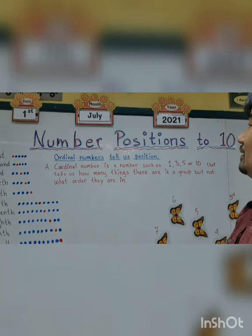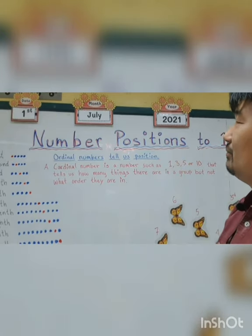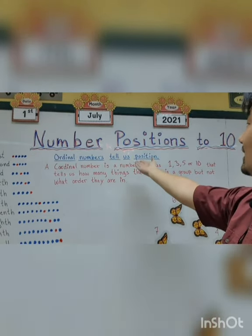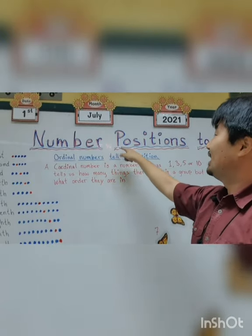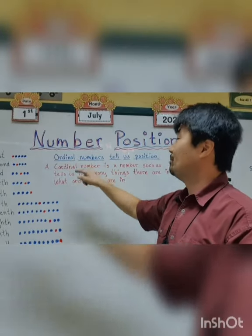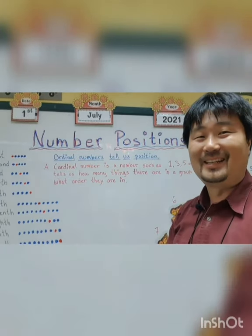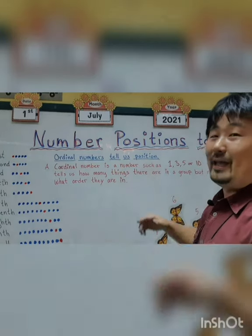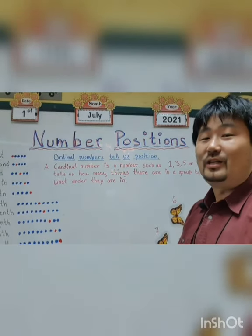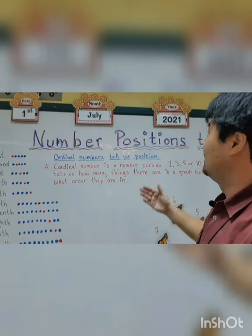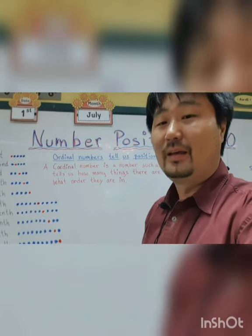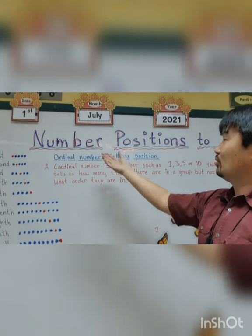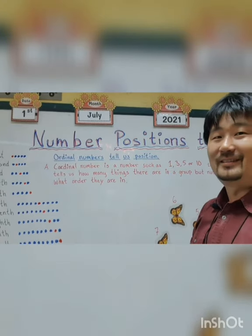So positions — number positions — could have been called ordinal numbers, because ordinal numbers tell us position. A number that tells us what position is called an ordinal number. Do you understand? An ordinal number tells us a position — what position. So this unit is called number positions to 10th. But the unit could have been called ordinal numbers, because ordinal numbers tell us position.